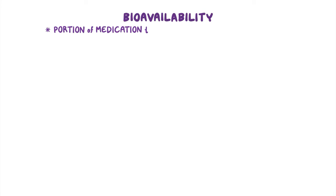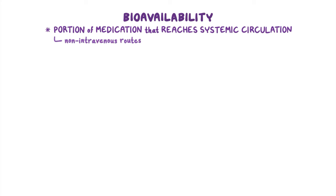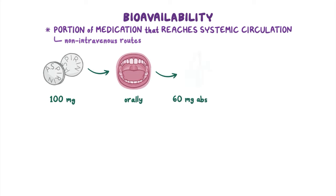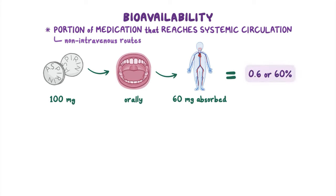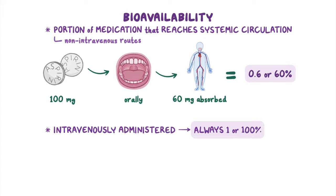A practical measure of absorption is bioavailability. Bioavailability refers to the portion of a medication that reaches the systemic circulation when administered by non-intravenous routes. For example, if someone takes 100 mg of aspirin orally and only 60 mg are absorbed into the circulation, the bioavailability is 0.6, or 60%. In contrast, the bioavailability of an intravenously administered medication is always 1, or 100%.